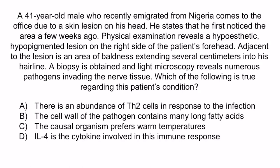A 41-year-old male who recently immigrated from Nigeria comes to the office due to a skin lesion on his head. He states that he first noticed the area a few weeks ago. Physical examination reveals a hypoesthetic hypopigmented lesion on the right side of the patient's forehead. Adjacent to the lesion is an area of baldness extending several centimeters into his hairline. A biopsy is obtained and light microscopy reveals numerous pathogens invading the nerve tissue. From the question stem, this patient is presenting with a hypoesthetic hypopigmented lesion as well as an area of baldness — these lesions are specific for the tuberculoid form of leprosy. Light microscopy revealed the pathogen invading the nerve tissue, and recall that Mycobacterium leprae invades the skin and nerves, so we can conclude this is most likely Mycobacterium leprae.